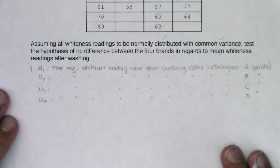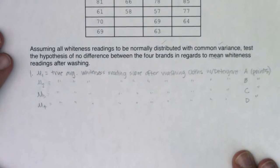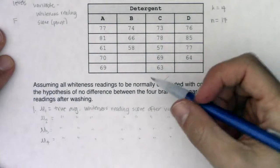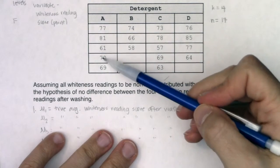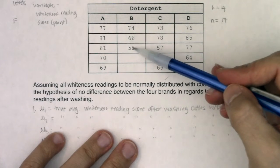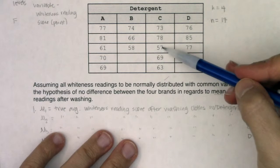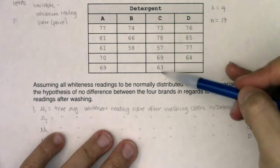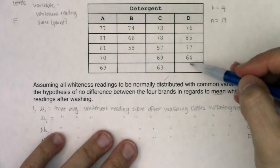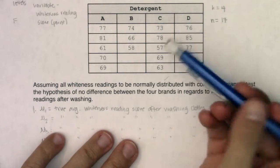Before we get too far — we're only through step one — let's get some gut feelings. Does it look like the averages could be equal, or does one detergent look better or worse? Detergent A ranges from 61 to 81, with the average maybe in the low 70s. Detergent B looks like the high 60s. Detergent C goes from 57 to 78, also high 60s to low 70s. Detergent D might be a little bit higher than the rest, but this could happen just by chance.